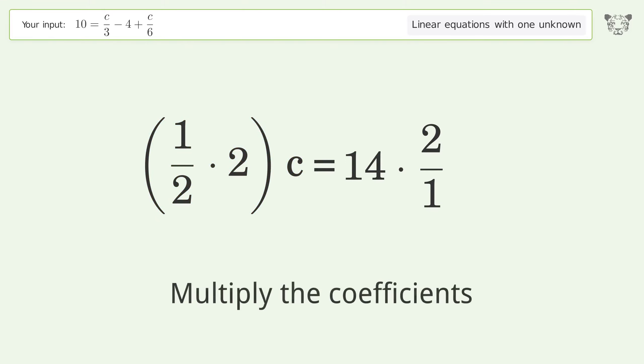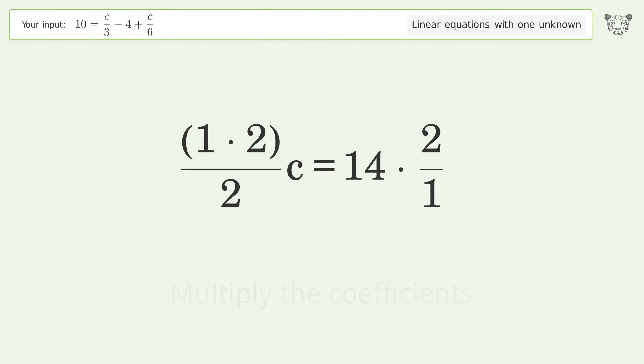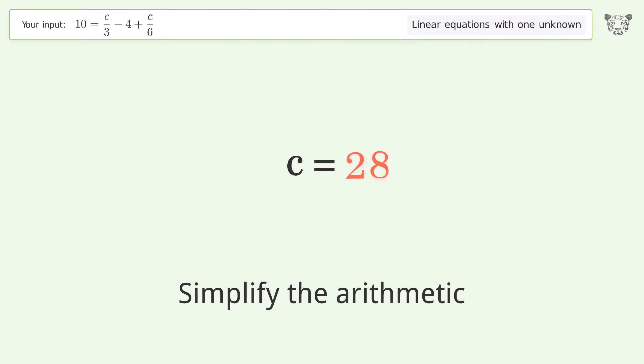Multiply the coefficients. Simplify the fraction. Simplify the arithmetic. And so the final result is c equals 28.